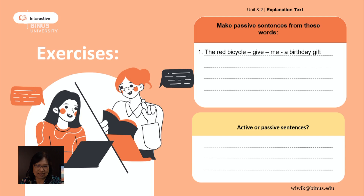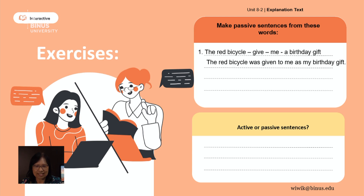Now it's your turn. Please make passive sentences from these words: 'the red bicycle,' the verb 'give,' then 'me,' and 'a birthday gift.' The answer: 'The red bicycle was given to me as my birthday gift.' You have to be 'was' and then past participle 'given.' Well done.